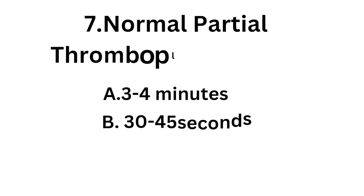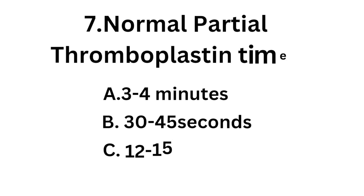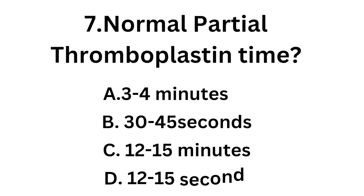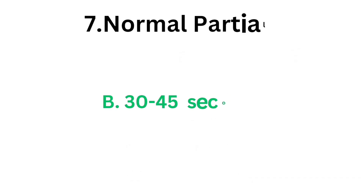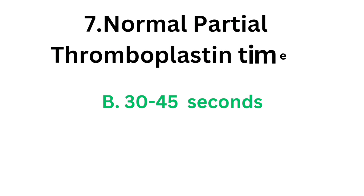Question number seven: normal partial thromboplastin time — option A 3 to 4 minutes, option B 30 to 45 seconds, option C 12 to 15 minutes, option D 12 to 15 seconds. The correct answer is option B, 30 to 45 seconds.